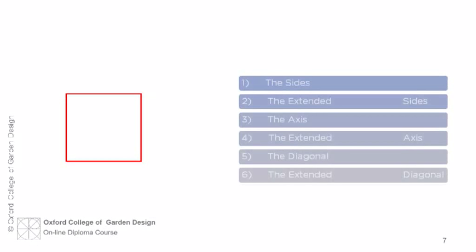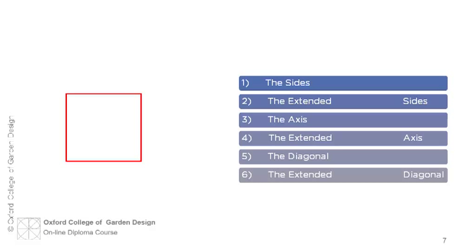The square is inherently divided by two axes, which are parallel to its sides and pass through the center. There are six specific components to a square that are important during form composition. These are the sides, the extended sides, the axes, the extended axes, the diagonal and the extended diagonal.